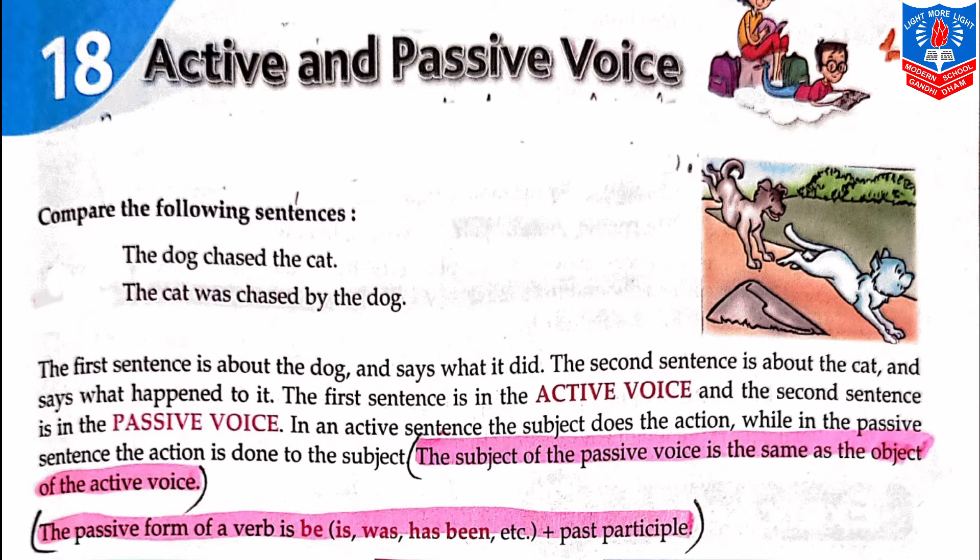The next rule is: the passive form of the verb is 'be' — that is, is, was, has been, etc. — plus the past participle will be used.